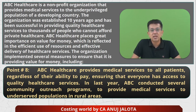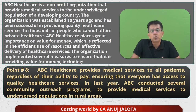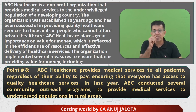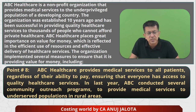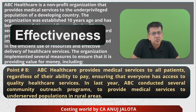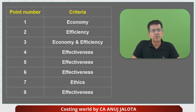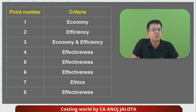Point number eight: ABC Healthcare provides medical services to all patients regardless of their ability to pay, ensuring everyone has access to quality healthcare. In the last year, ABC conducted several community outreach programs to provide medical services to underserved populations in rural areas. This aligns with their objectives of providing medical healthcare irrespective of background, so this comes under effectiveness. Summary of all eight points: point one — economy; point two — efficiency; point three — economy and efficiency; points four, five, six, and eight — effectiveness; point seven — ethics. Now let's come to the MCQs.